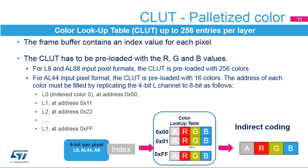The color lookup table is only used in case of indexed color for L8, AL44, and AL88 input pixel formats, and supports up to 256 entries per layer. The frame buffer contains an index value for each pixel. The CLUT has to be loaded with the R, G, and B values that will replace the original RGB values of that pixel. Each color or RGB value has its own address, which is the position within the CLUT.